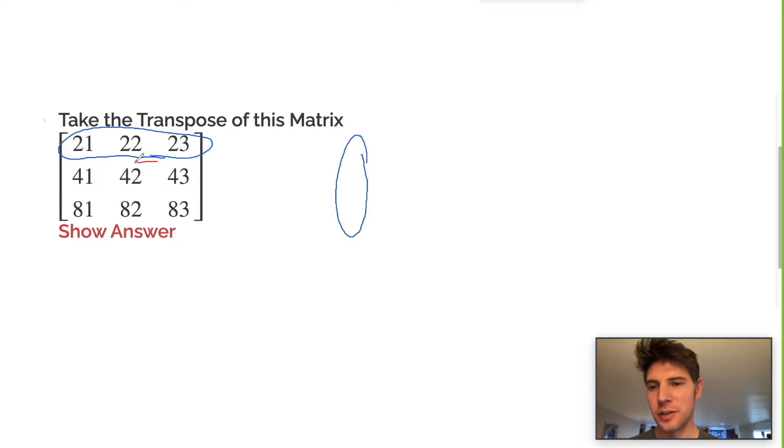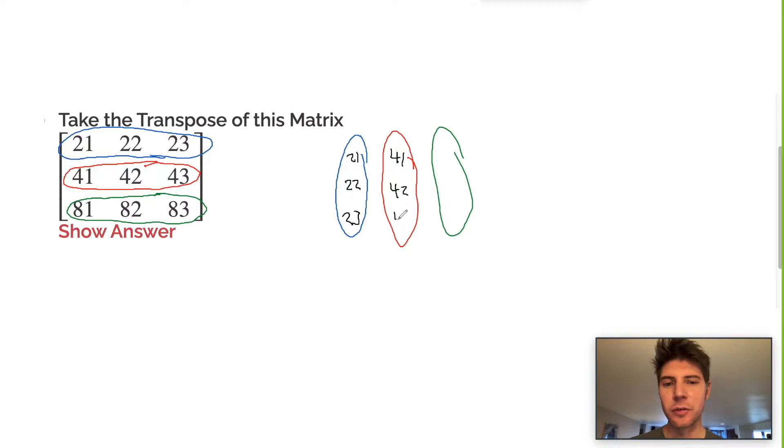You take the second row and it becomes the second column, and the third row becomes the third column. So we just plug in the values: 21, 22, 23 - now I'm going down with them instead of across. Then 41, 42, 43, and 81, 82, 83. That's it, that's the answer.